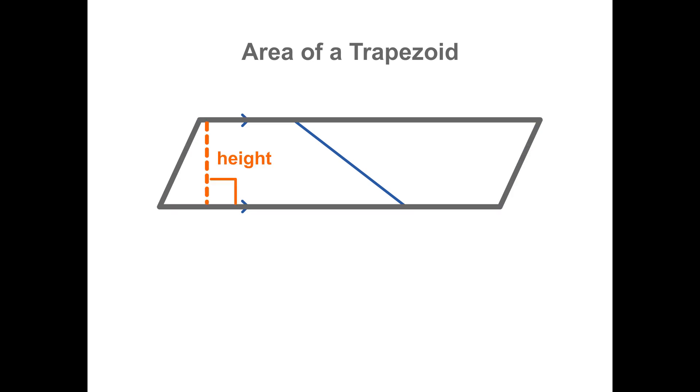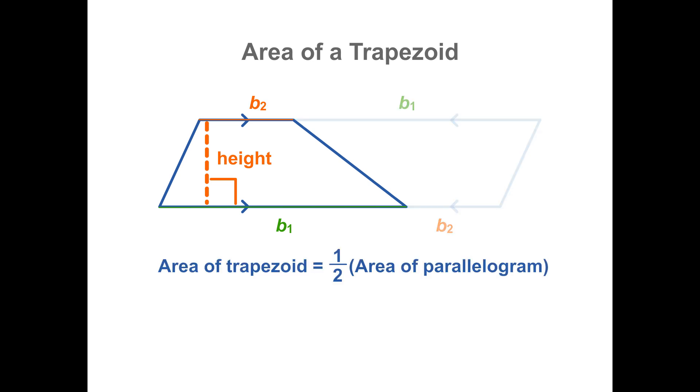The height of the parallelogram is the same as the height of the trapezoid. The base of the parallelogram is the length of B1 plus B2. So the area of one trapezoid is one half the area of the parallelogram, or one half times the base, B1 plus B2, times the height.